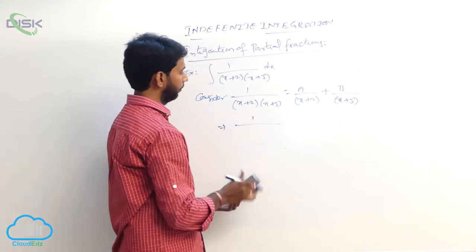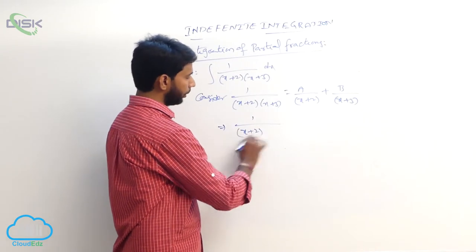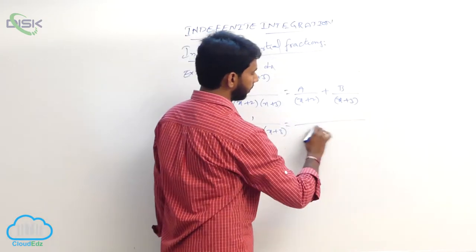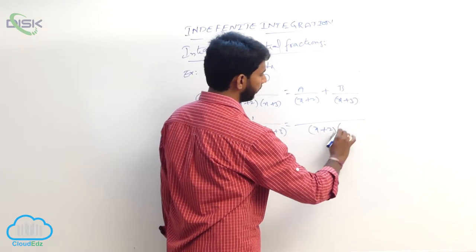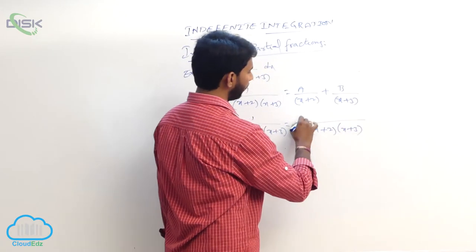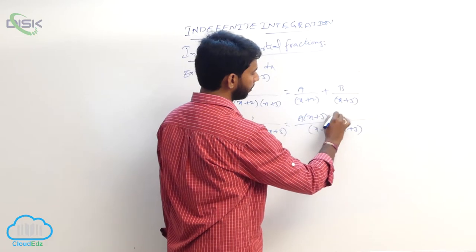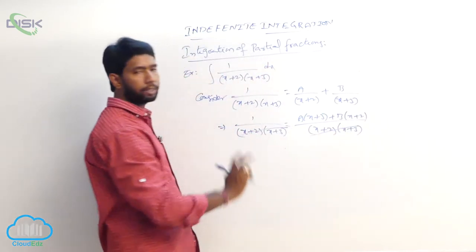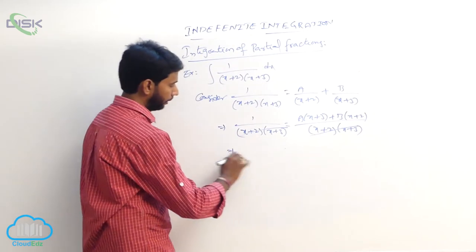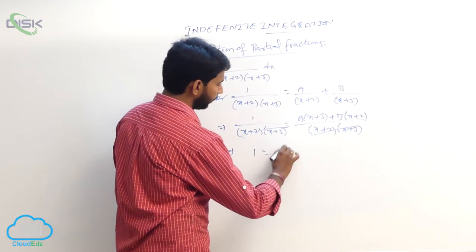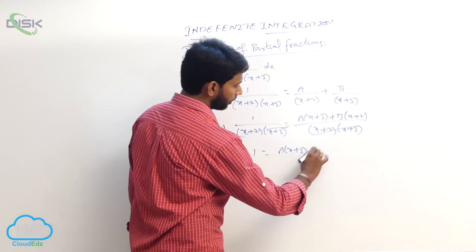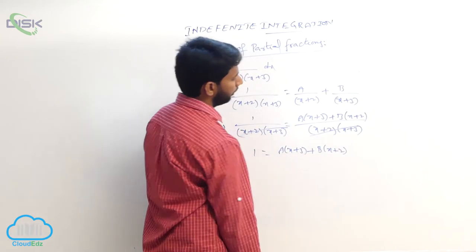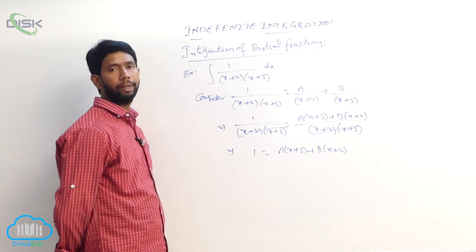Taking LCM: 1/((x+2)(x+3)) equals [A(x+3) + B(x+2)] / [(x+2)(x+3)]. After cancelling the denominator: 1 equals A(x+3) + B(x+2).